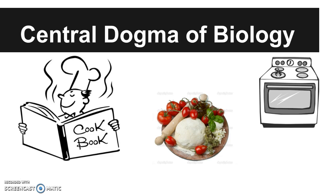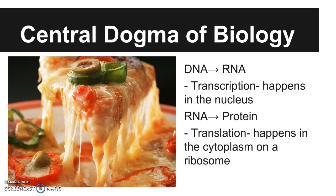So this is the central dogma of biology. DNA goes to RNA — transcription happens in the nucleus. The actual act of DNA going to RNA, specifically mRNA or messenger RNA, is transcription. The mRNA then leaves the nucleus and goes out to the cytoplasm where ribosomes can attach to it, and this is what's called translation. This is where we can actually see what's happening with our genes.